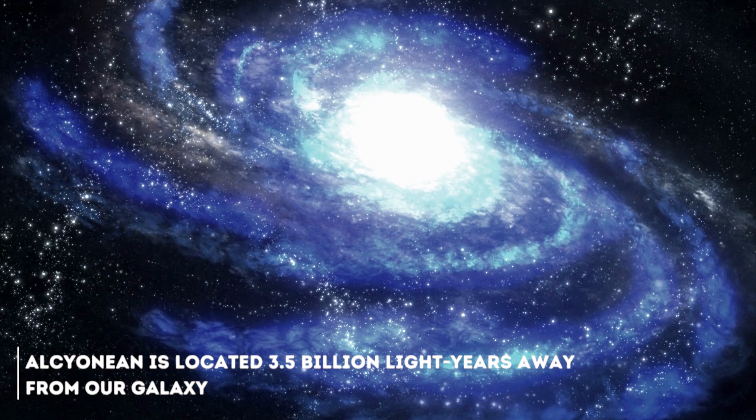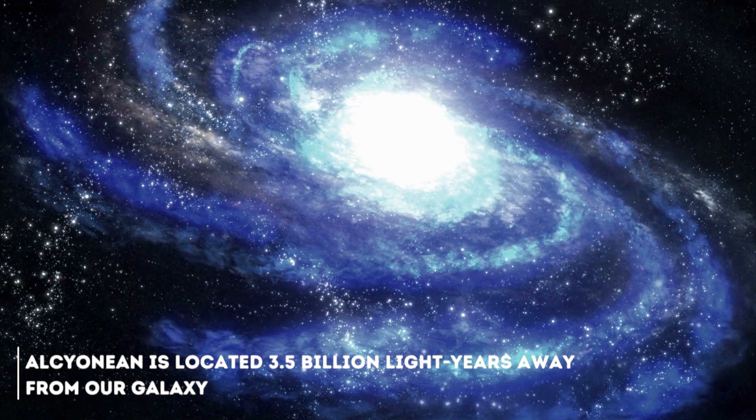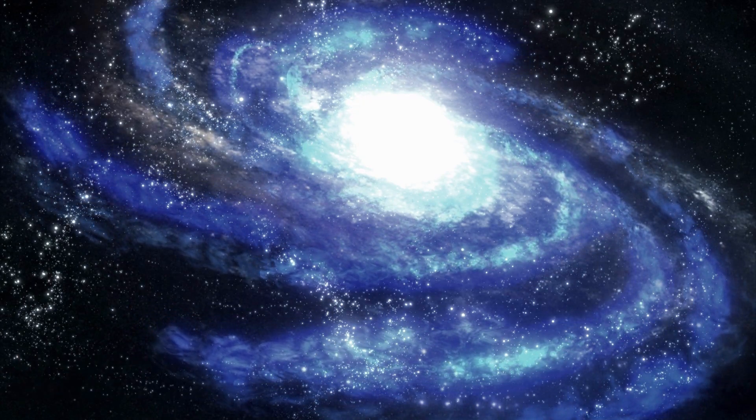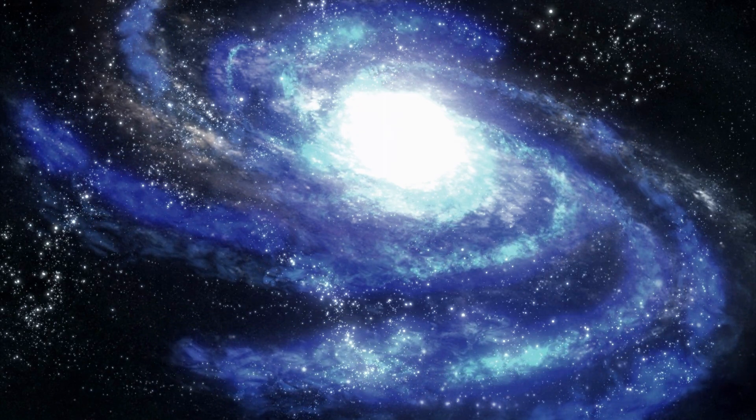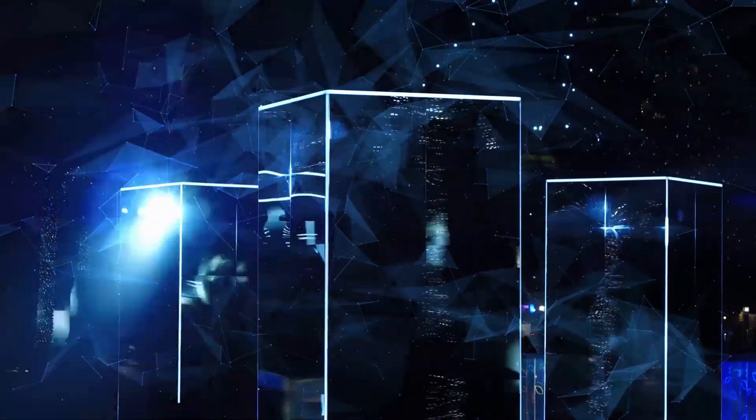Alcinean is located 3.5 billion light years away from our galaxy. According to several scientists, this galaxy is one of the strangest things ever found in our universe. The beginning of its history is complicated in itself.